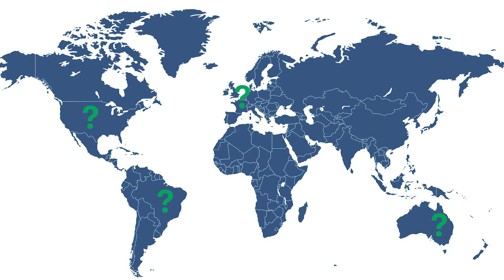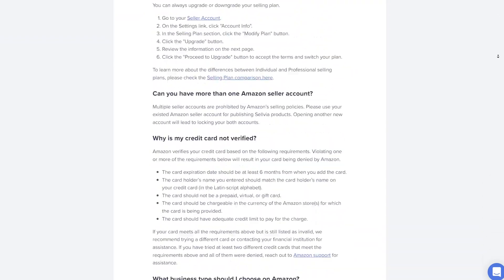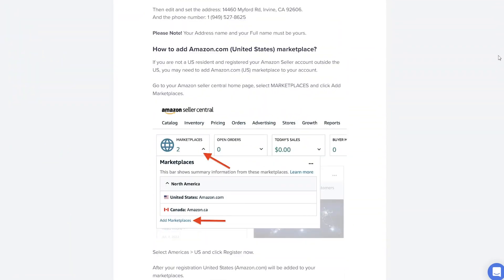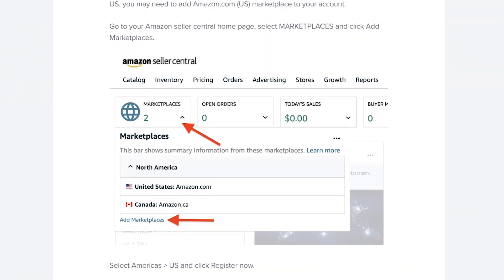Before you start, remember where your account was registered. If you are not a US resident and registered your Amazon seller account outside the US, you may need to add the amazon.com US marketplace to your account. You'll find our instructions on how to do it in the description below this video.